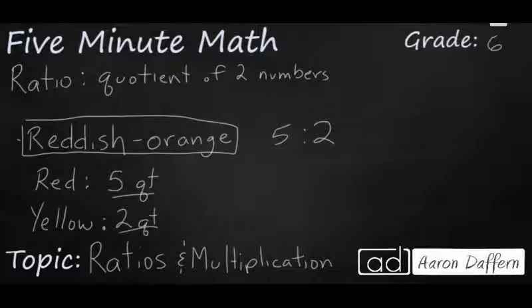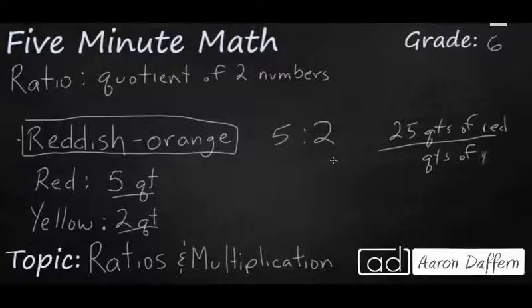So our question is, if you have a very large wall and you know that you're going to need 25 quarts of red, how many quarts of yellow would you need in order to keep the same ratio? Well, let's set this up as a fraction here. 25 quarts of red over how many quarts of yellow is going to give us the same ratio.